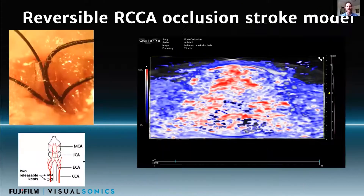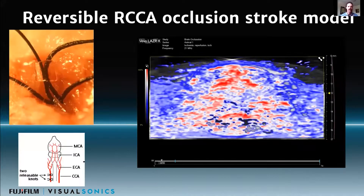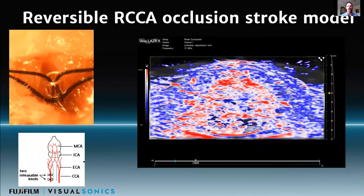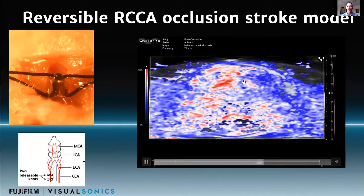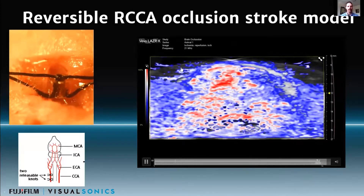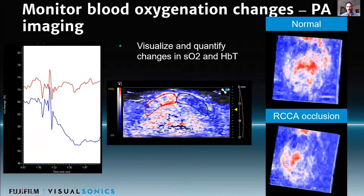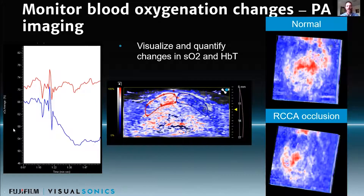Bringing this back to our common carotid stroke model, where we're cutting off the circulation temporarily in the right common carotid, you'll see that oxygen saturation drops out in the right hemisphere, particularly in the cortex. We can draw regions of interest using the software and generate maps over time of oxygen saturation, looking at the non-ligated hemisphere versus the ligated cortical hemisphere — and you see a significant drop in oxygen saturation when you do the ligation on the right.